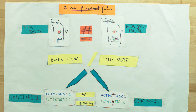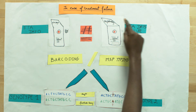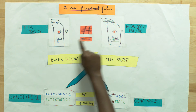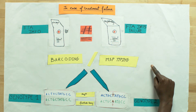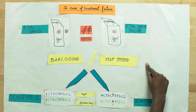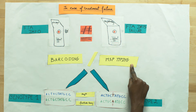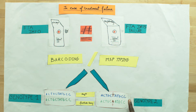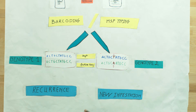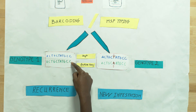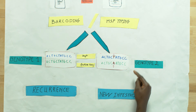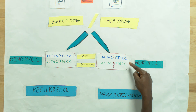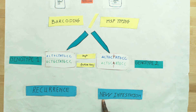What is treatment failure? We have to compare the parasite DNA at day zero and at the failure day. For this, we perform molecular tests — barcoding or MSP typing — to compare the DNA sequence at day zero and the failure day. If we have the same sequence, it means recurrent infestation. But if we have a different DNA sequence, it means the infestation is new.